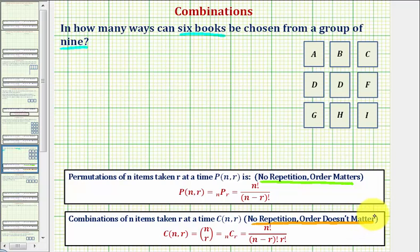So to illustrate this, let's say these are the nine books. Let's go ahead and select six of them. Let's say we select these six here. Now if we change the order of these books, does it change the group of books? And the answer is no. We still have the same six books, and therefore the order does not matter.